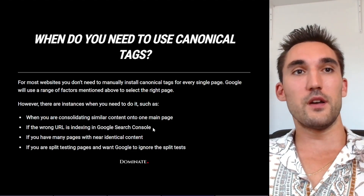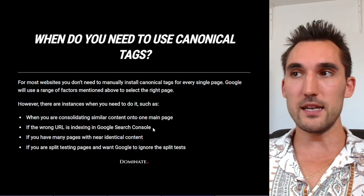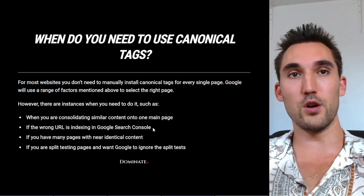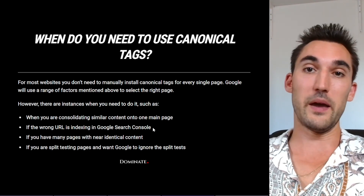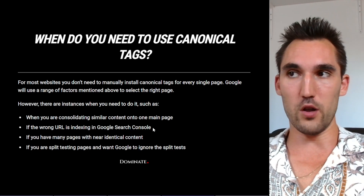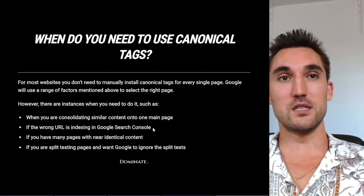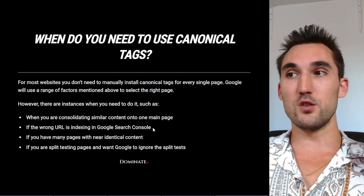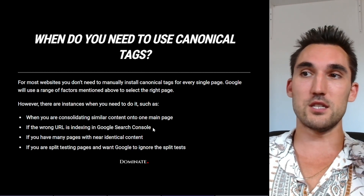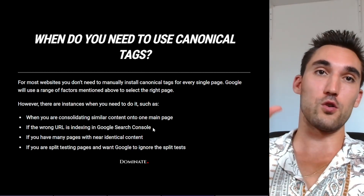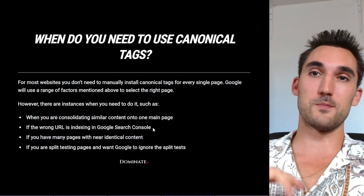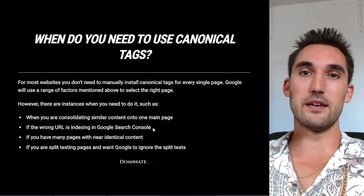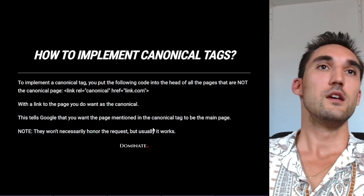Another case is if you have too many pages with near-identical content — you'll need to put canonicals to show which main page you actually want indexed. Another example is if you're split testing multiple pages and you want Google to ignore the other split tests and just show your main page. You would put canonical links on all those split test pages pointing to the main page, and then Google will theoretically ignore those and just index the main one.